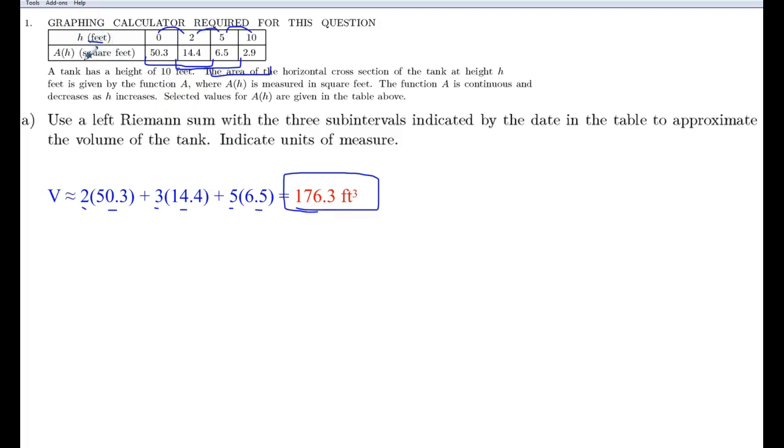So notice H is in feet, area is in square feet, so when we multiply those, this is feet times square feet, so the units are cubic feet, or you could say feet cubed. And notice on the AP Calculus exam, the way they score the points is usually you need to write down the equation. So here, just writing out what that is, that 2 times the 50.3, and the 3 times the 14.4, and then the 5 times the 6.5, that would be the same as writing down the equation, essentially. And then you get one point for the left Riemann sum, and then one point for the approximation. So one point for writing down the values like that, and one point for having the correct calculation. There's two points.